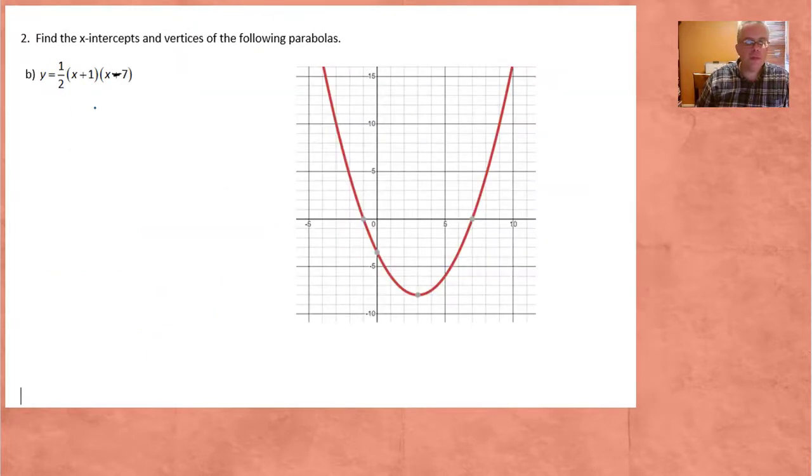We're going to do a couple examples. On this one, a is 1 half so we know it opens upwards. The first intercept would be at negative 1 comma 0 because negative 1 makes the first factor 0. This is x minus 7, so 7 would make that 0. So sure enough, those are the two x-intercepts.